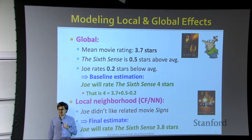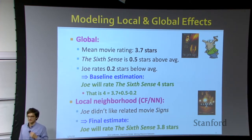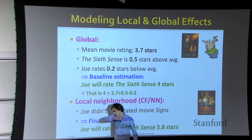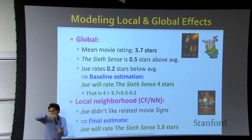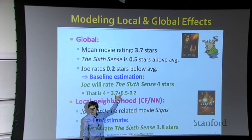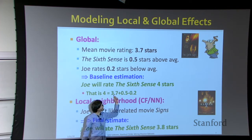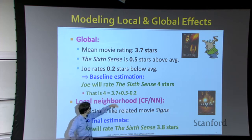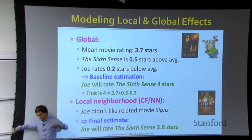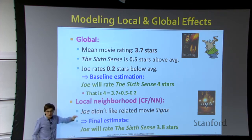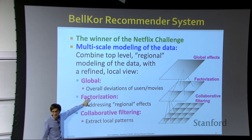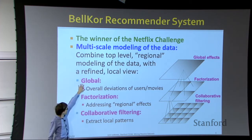A student asks why we use the original rating deviation. The reason is we create a baseline — the overall average across all movies — and then we work with deviations from that baseline. The average rating for Sixth Sense is 3.7 + 0.5, the average rating for Joe is 3.7 - 0.2. By creating this baseline, we can work with these deviations more efficiently. That's the practical reason.